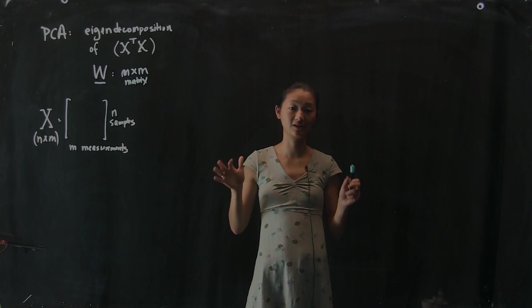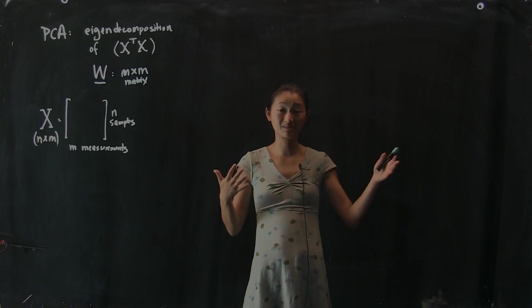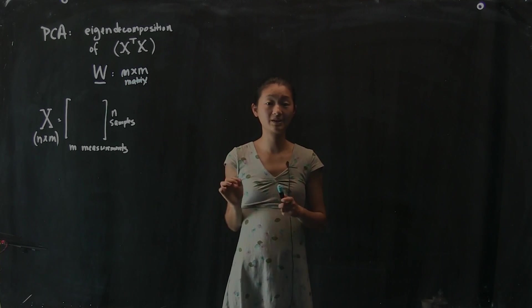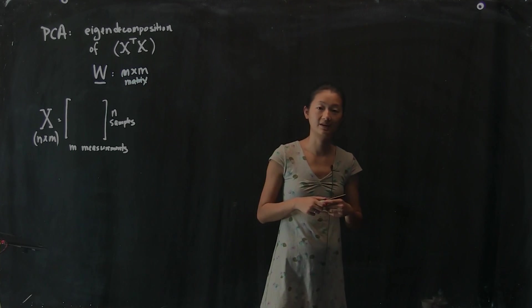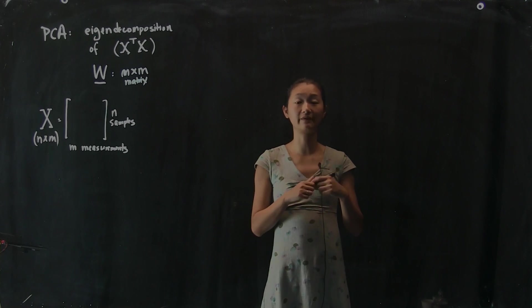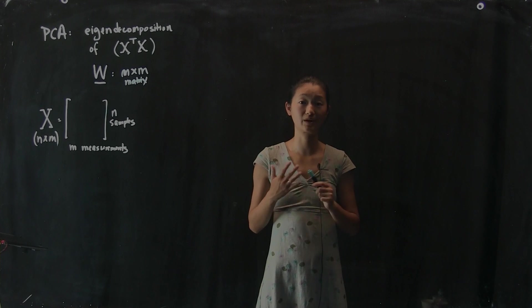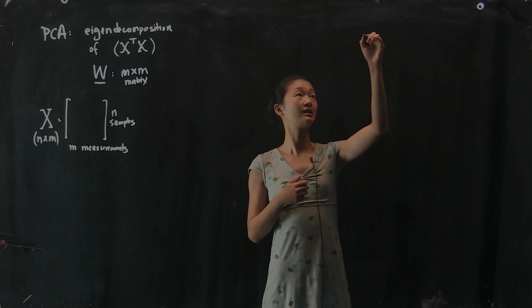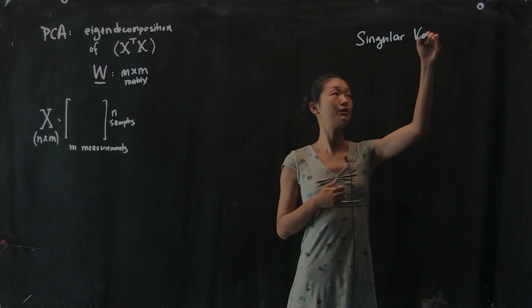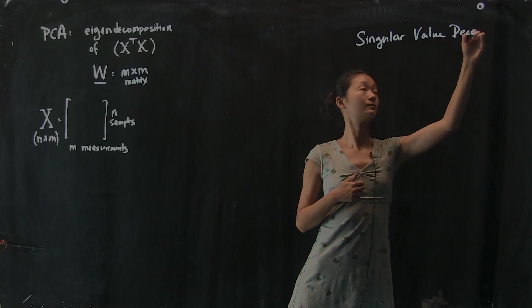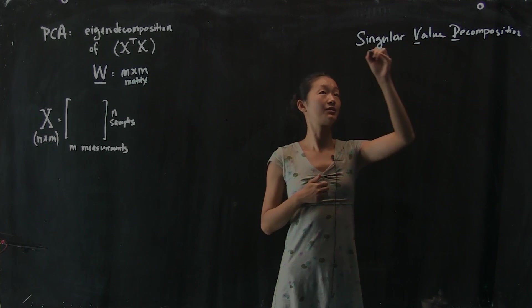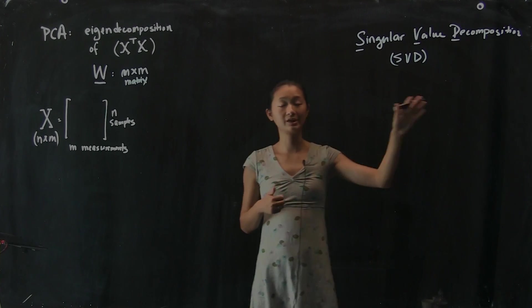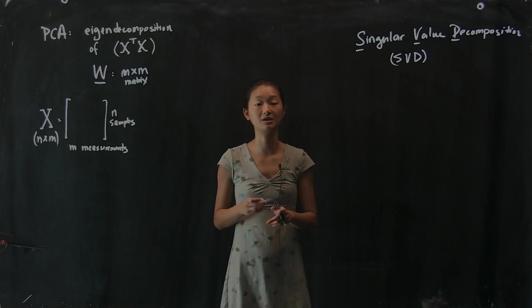Because W is what we want. We want this m by m matrix that tells us what all of the principal components are, and really sometimes we only want the first couple. So it turns out that if you actually wanted to compute W in a more computationally efficient way, there is another linear algebra object called the singular value decomposition that a lot of people use because it is a better way of computing W without actually constructing this m by m matrix.